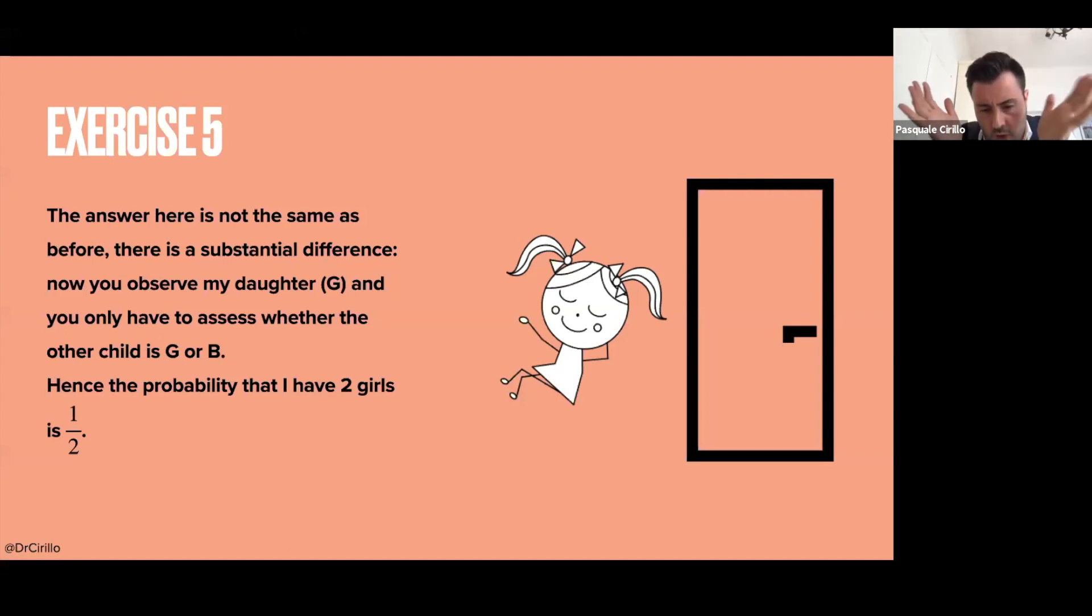Now, if you do not believe me, so if you do not believe the justifications that I gave you, there is a formal way of proving this result. And I'm pretty sure that you know where I am heading to. So the formal way of verifying this exercise. So the difference in these exercises is essentially to use one fundamental theorem of probability, which is the Bayes theorem or the Bayes formula, as you want to call it, is exactly the same stuff.